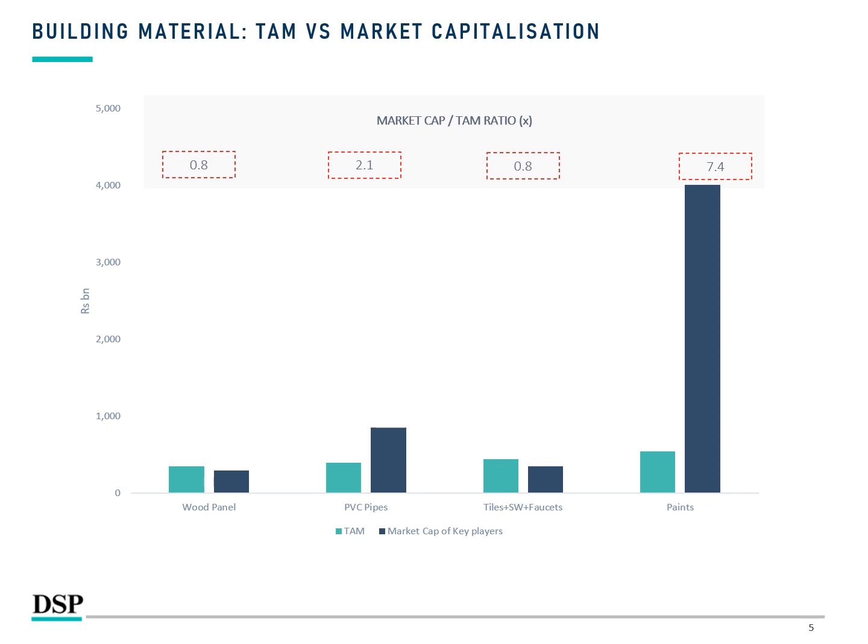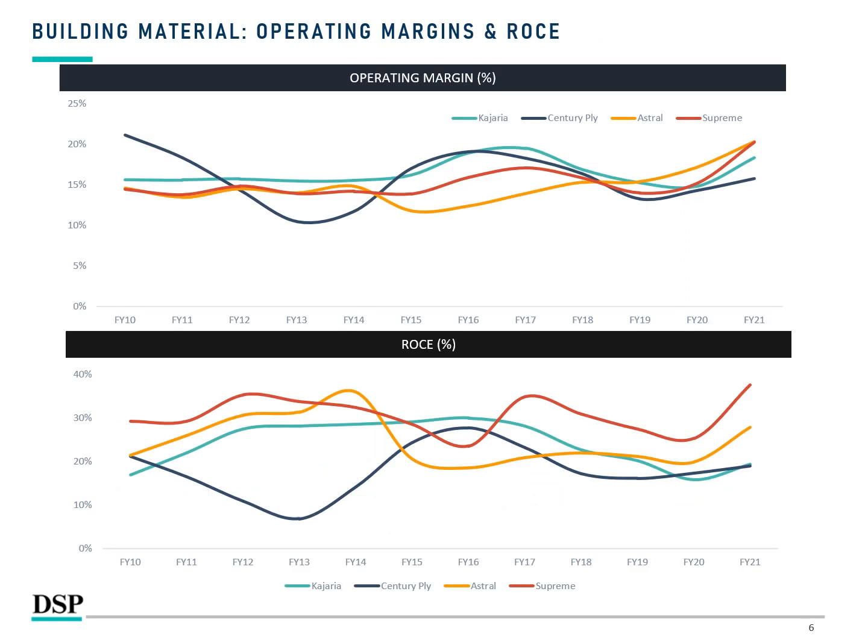As we can see in the Paints segment, the larger companies with all these characteristics have already traversed that path. The operating margins of all category leaders and branded players in these sub-segments are quite resilient even in the down cycle, and now they are on an uptrend given the uptick in the overall building material cycle in the last 18 to 24 months.